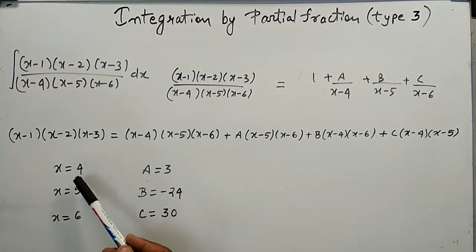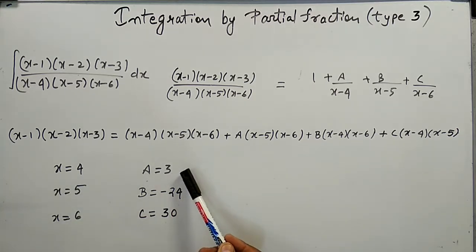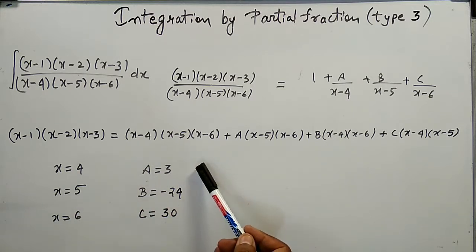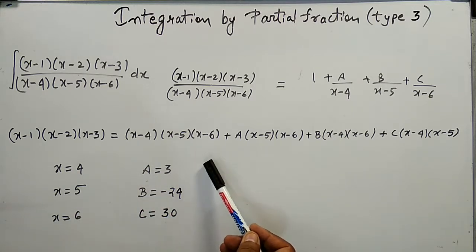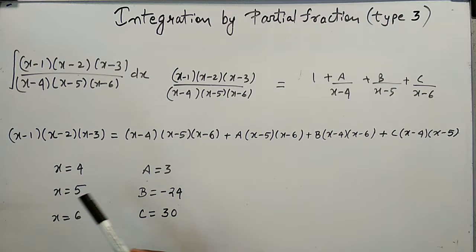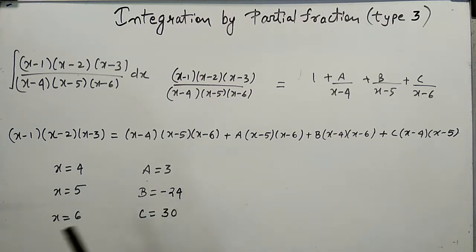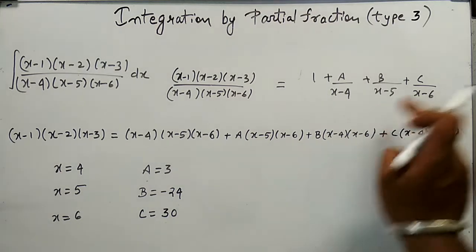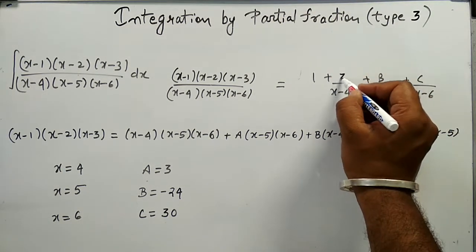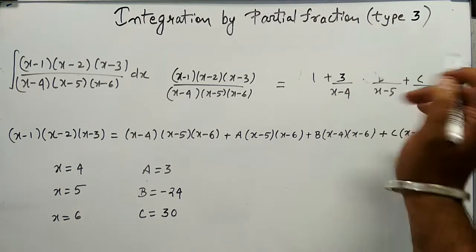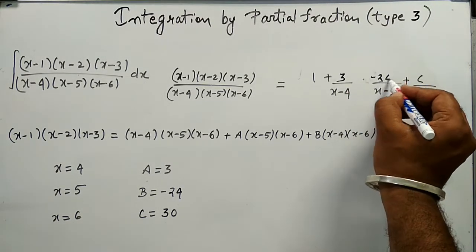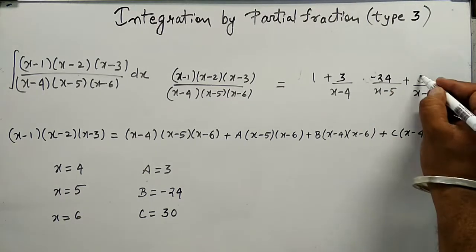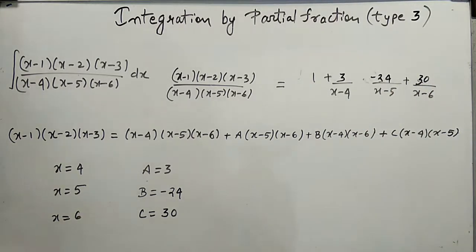Putting x=4 gives A=3. Putting x=5 gives B=−24. Putting x=6 gives C=30. Now substituting the values: A=3, B=−24, and C=30 into the partial fraction form.